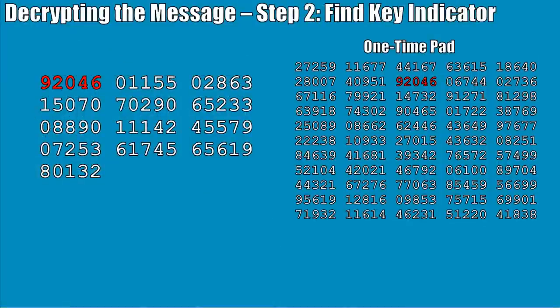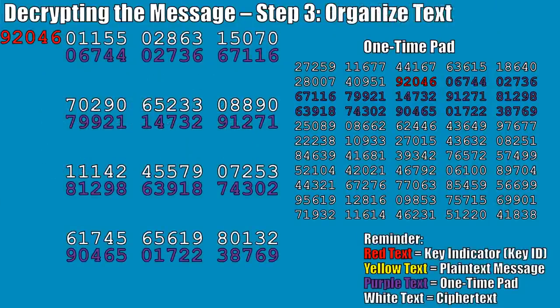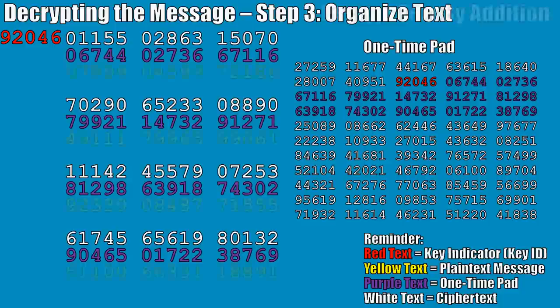To decrypt, the very first step is to find the key indicator. Our very first string of five numbers in the message is 92046 — that triggers the recipient to flip through their one-time pad and find 92046. Once we find our key indicator, we copy down the one-time pad numbers directly underneath our message, just like we did before in reverse. We push the key indicator off to the side since it wasn't used for anything but to tell us where to start.